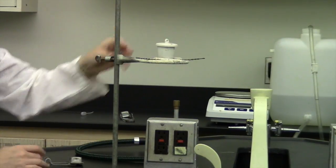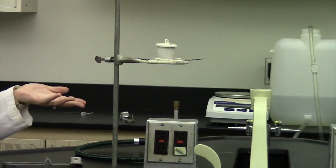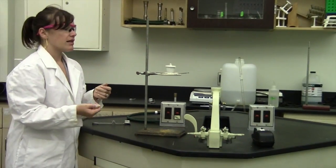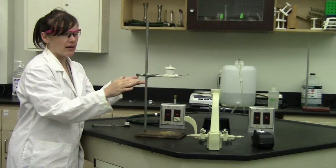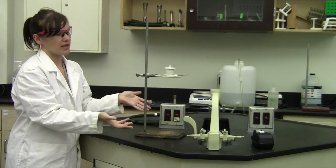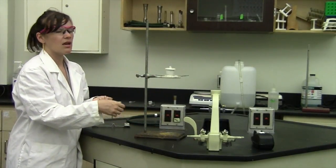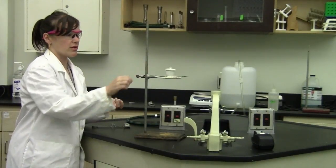Now one item I don't have here but falls into the category of common sense is a pair of tongs because we would have a Bunsen burner here and this would get very hot. So when you're finished, you would use tongs to remove the crucible.